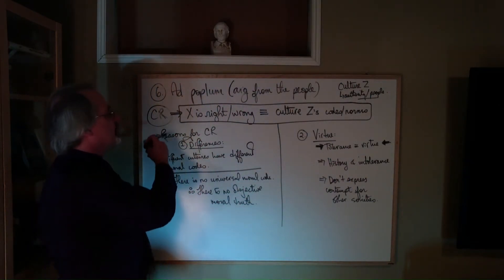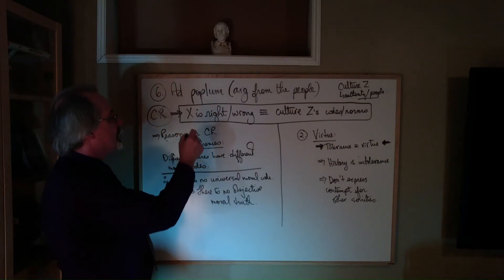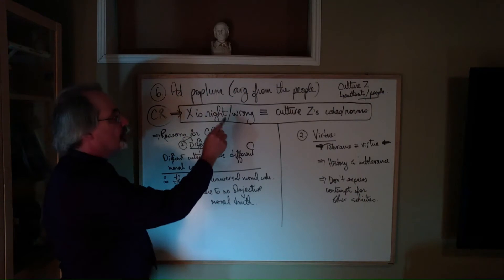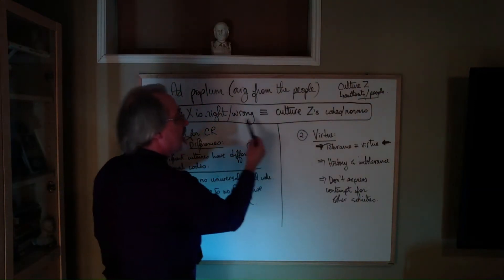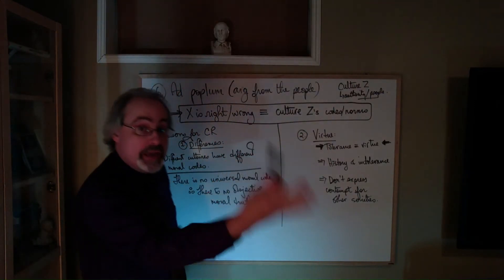What does it say? Well, cultural relativism says something like this: that X, some action or a way to think or whatever, is right or wrong. How is that unpacked? How is that defined? How was that arrived at?